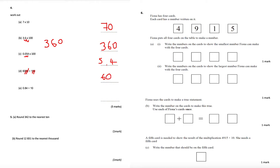Part e: 0.84 divided by 10 — move the decimal place one place to the left, because the number is getting smaller. The answer is 0.084.